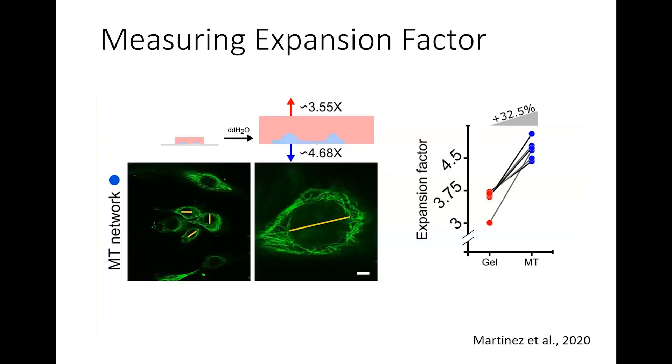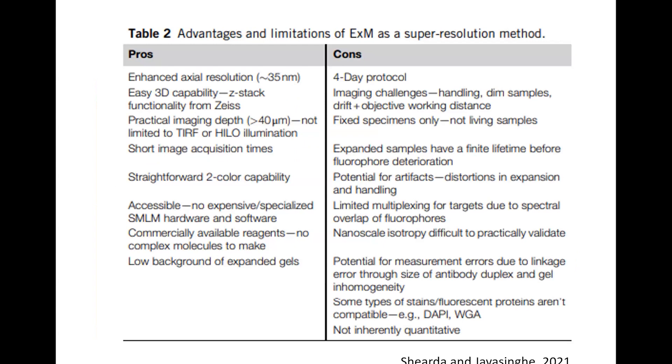So how do you actually measure the expansion factor? One of the easier ways to do this is go through your sample and pick a structure that is generally going to be the same size. In this example, they measured the diameter of a variety of nuclei in unexpanded and a whole other set in expanded, and were able to show that their expansion of the microtubule network increased to approximately 4.68 times the original size. If you're using tissue or something that's easy to navigate, you can just image the sample before expansion and then after.